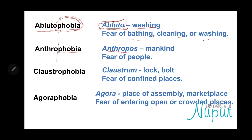Next: 'anthropos' — the root word. Anthropos means mankind, which means the fear of people. This can be a result of some trauma. If a person has gone through certain trauma, he might suffer from anthropophobia. The root word is 'anthropos' — you already know the root word.